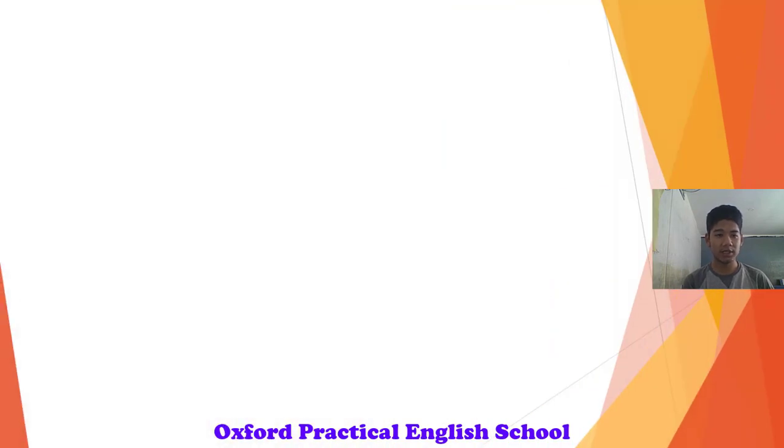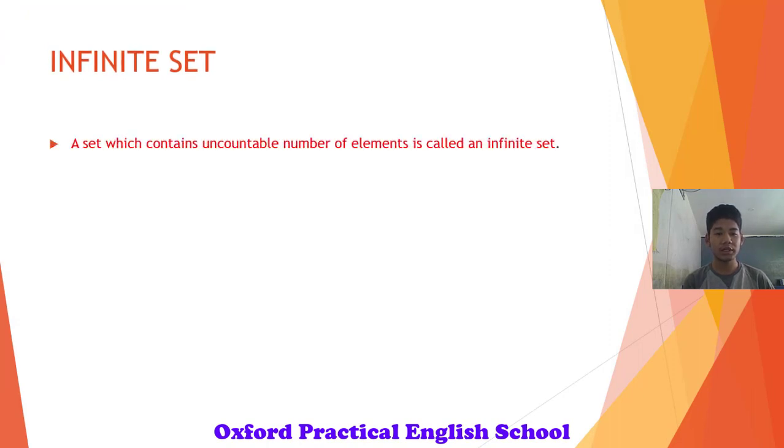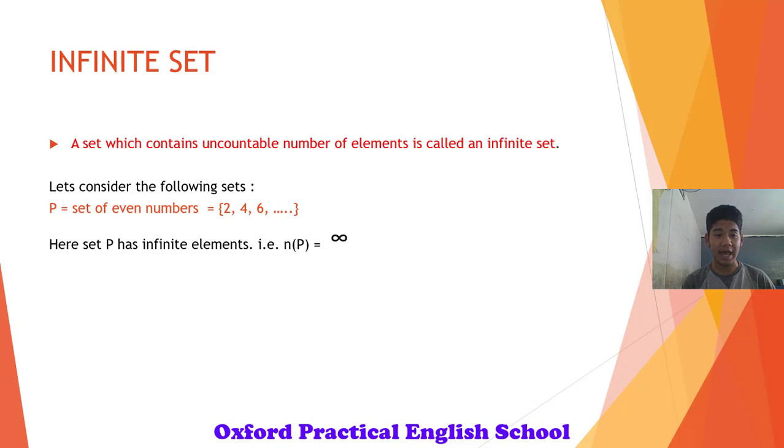Our next type of set is infinite set. Infinite simply means uncountable. So a set which contains uncountable number of elements is called an infinite set. Let's consider the following sets. Set P, set of even numbers, they are 2, 4, 6 and so on. Listing down all the even numbers is impossible. Therefore, set P has infinite elements and hence set P is an infinite set.